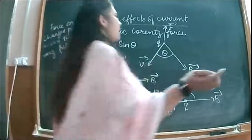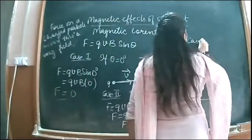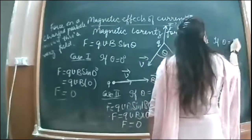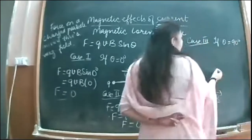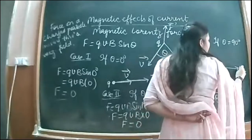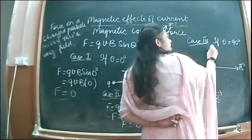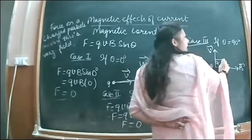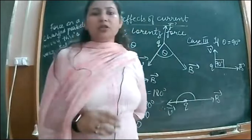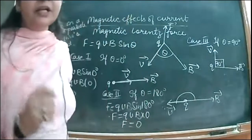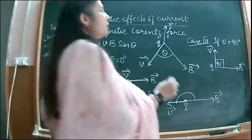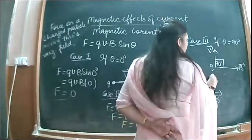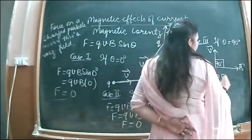Now Case 3: theta is 90 degrees — the magnetic field and velocity of the charge particle are making an angle of 90 degrees. Let us put theta = 90° in the formula. We get F = qvB sin 90°.